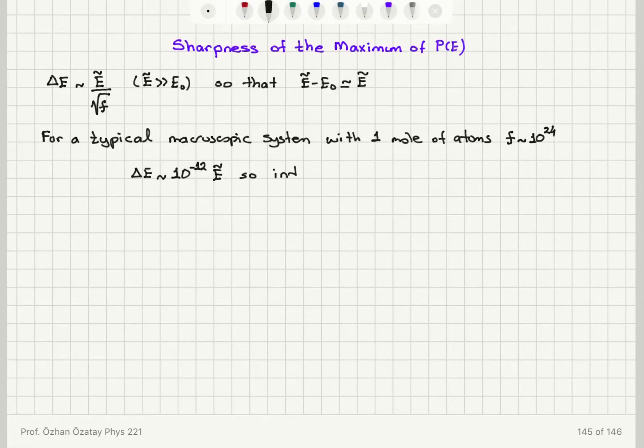So what we have here is indeed the magnitude of the fluctuation is much, much, much less than the most probable energy. So what we have is that the energy values for system A never practically differs from E tilde.